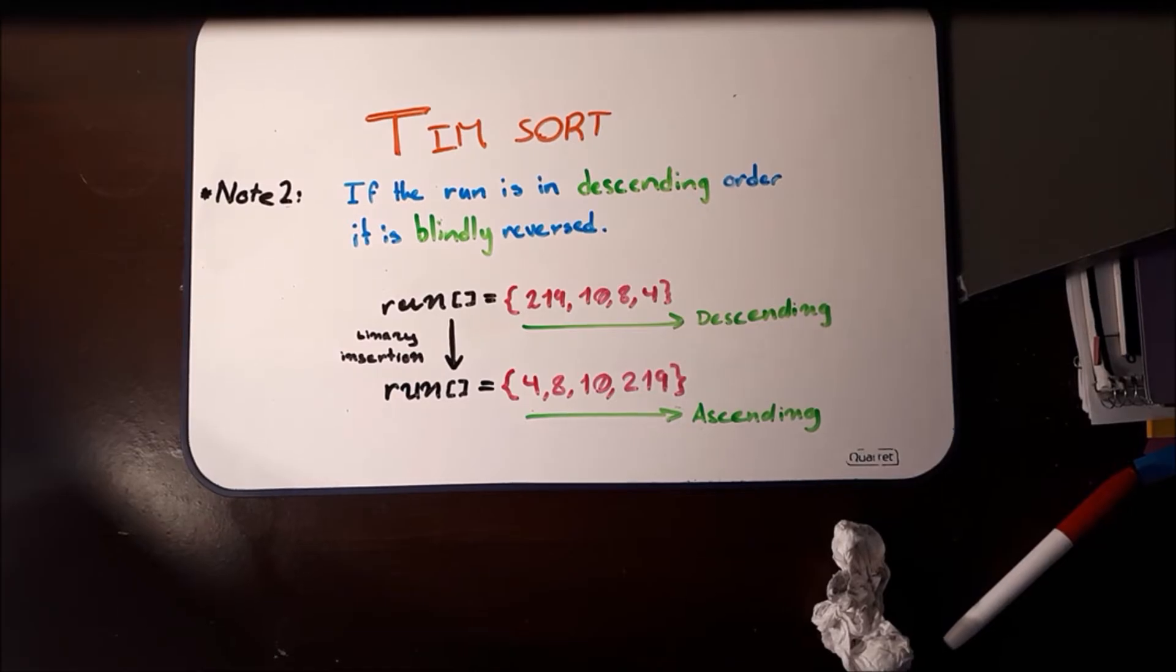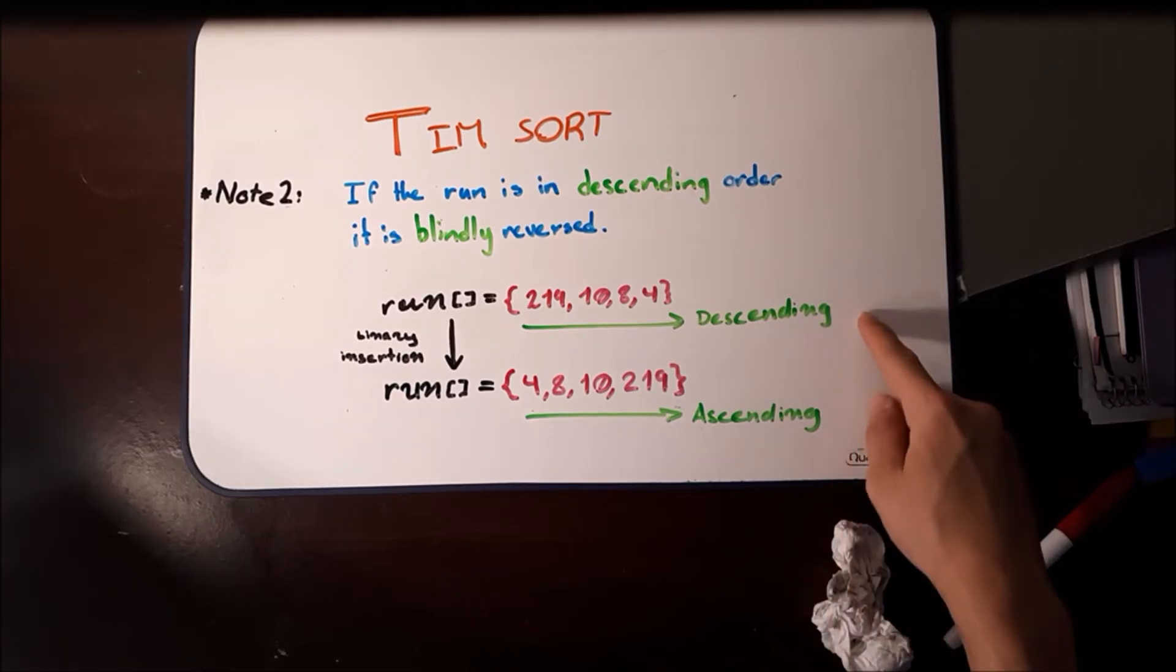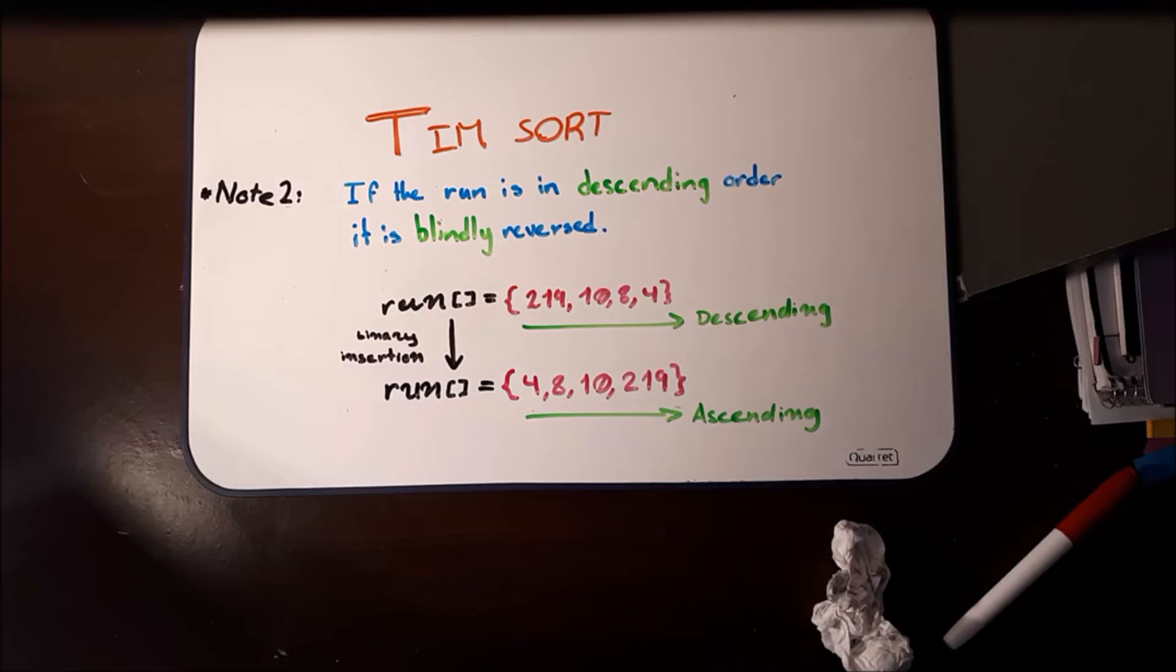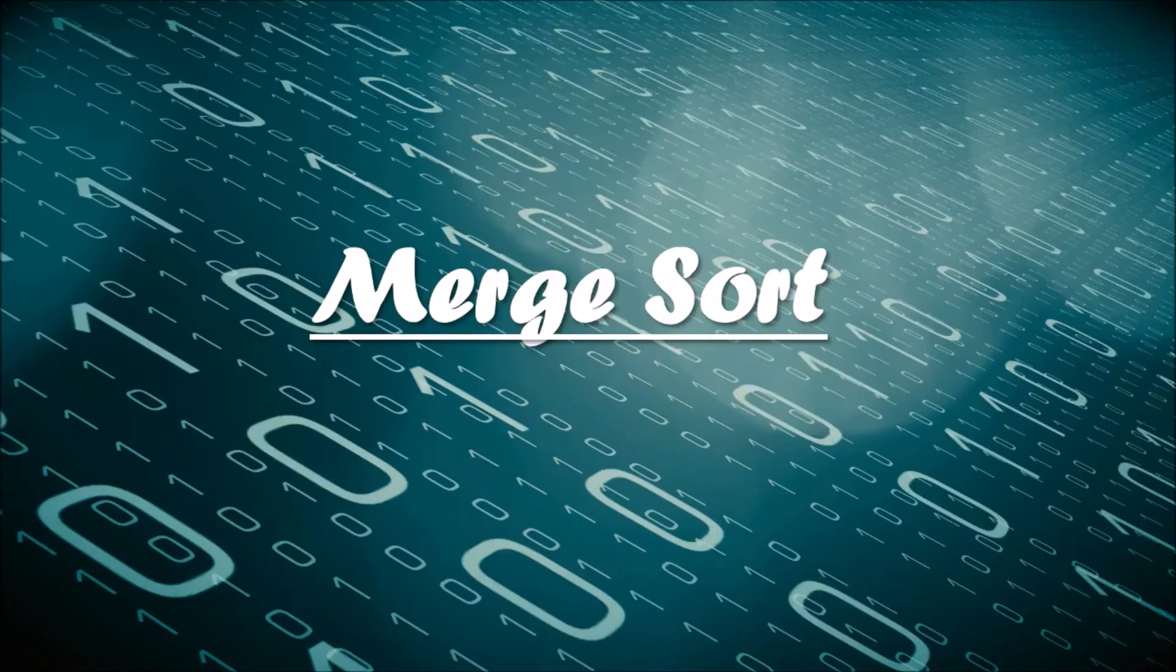If you want to know why it's important that it's only descending here, and not descending or equal to, watch our video on balance and stability. Now that we have these runs, we're going to merge them. And to do this, we're going to be using merge sort.